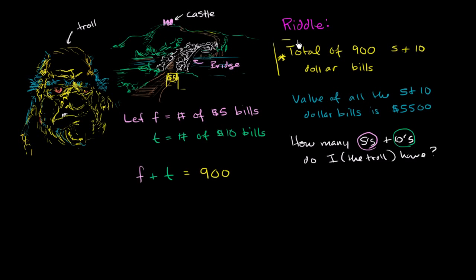So this statement, this first clue in our riddle, the first clue in our riddle can be written mathematically like this if we defined the variables like that. And I just said f for 5 because f for 5 and t for 10. Now let's look at the second clue.